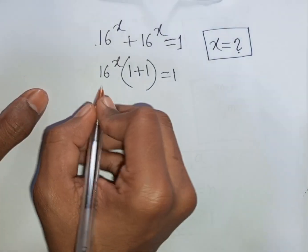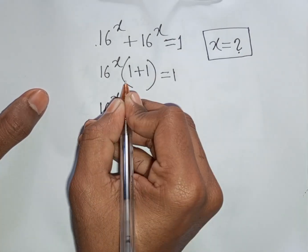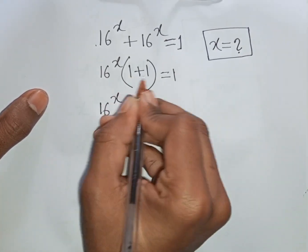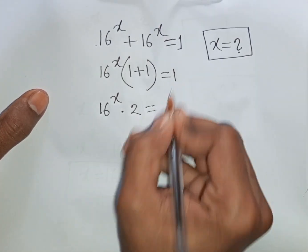Now we have 16^x times (1 plus 1), that means it will be 2, equals 1.